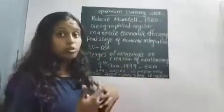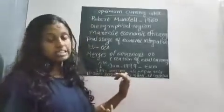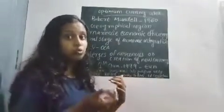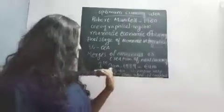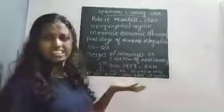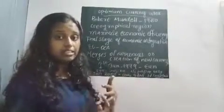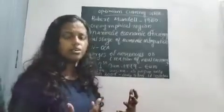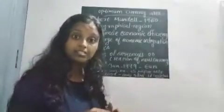The euro notes and coins were not introduced in 1999. Banknotes and coins of euro were introduced on 1st January 2002, three years after the euro was pronounced as the common currency. The eurozone consisted of 12 countries at first, and now the eurozone consists of 19 countries.